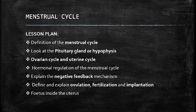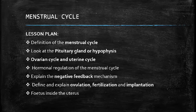We're going to look at what is the menstrual cycle and define it. Then we're going to look at the pituitary gland, or what we call the hypophysis. Then we're going to look at the ovarian cycle and the uterine cycle, which are parts of the menstrual cycle. We'll also look at the hormonal regulation of the menstrual cycle, explain the negative feedback mechanism, define and explain ovulation, fertilization, and implantation, and finally look at the structure of the fetus inside the uterus.